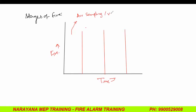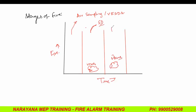The second stage: smoke will be there — it is visible now — and it will be addressed by smoke detectors. The third stage is when a little bit more flame will come, so it will be detected by flame detectors.